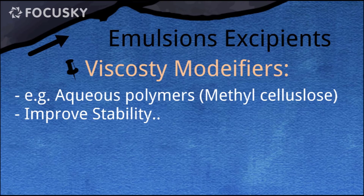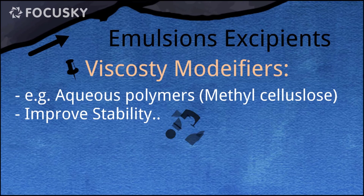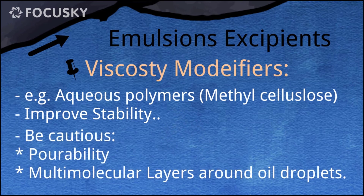The last component we will mention here is the viscosity modifier. We might add certain hydrophilic polymers to increase the viscosity of the external aqueous phase in an oil-in-water emulsion; that would improve the stability of the emulsion by decreasing the propensity of a certain instability issue — type in the comments what instability problem can be resolved by increasing the emulsion viscosity. You can watch the instability issues video if you don't have it on the top of your head right now. However, we have to maintain balance, because too viscous a formulation will not be pourable for oral administration, for example. Also, the viscosity modifier — usually a hydrophilic polymer like methyl cellulose — has a tendency to form a multi-molecular layer around the droplets of the internal oil phase, and that should be taken into consideration.